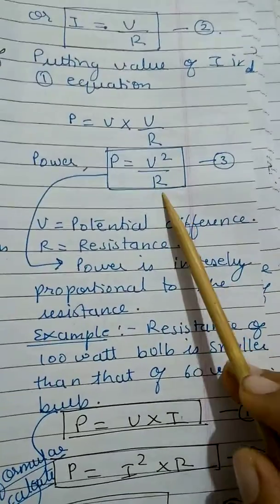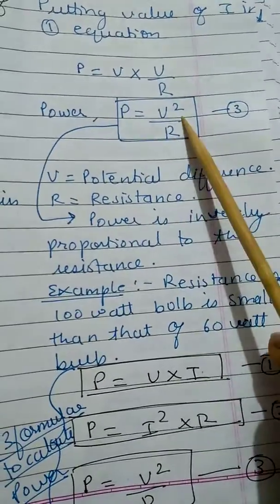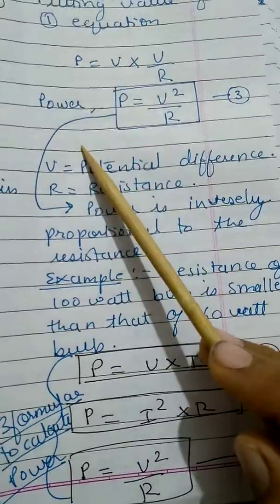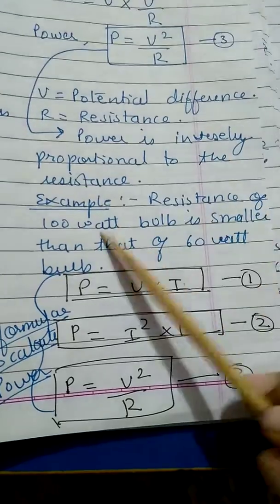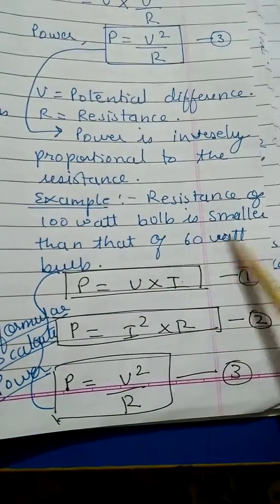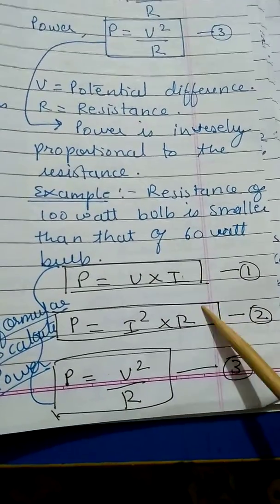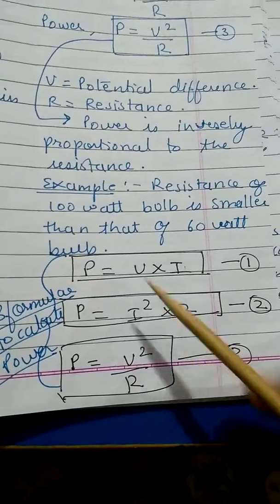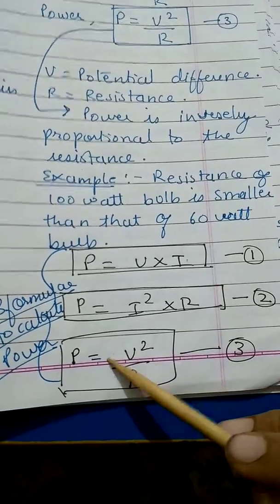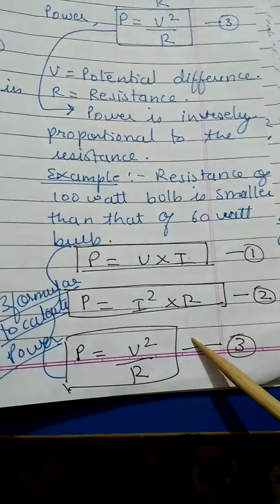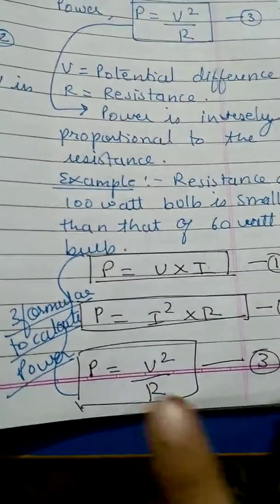Power is inversely proportional to resistance — if resistance is more, power will be less. We use P equals V²/R when potential difference and resistance are given. For example, the resistance of a 100-watt bulb is smaller than that of a 60-watt bulb. So the three formulas are: P equals V×I, P equals I²R, and P equals V²/R.